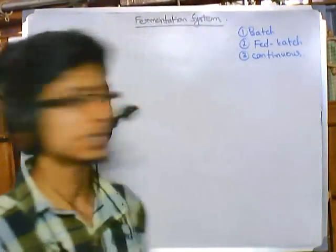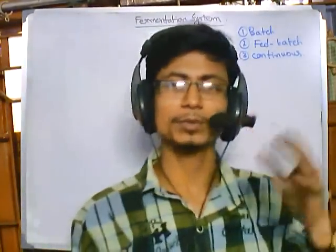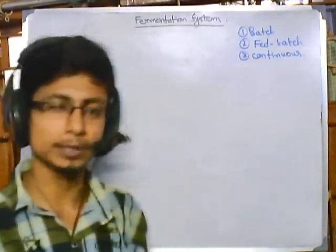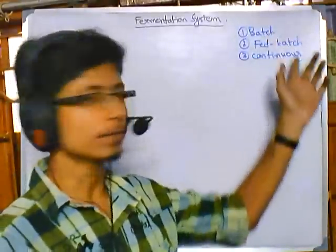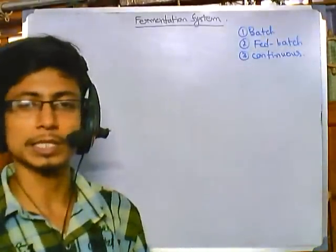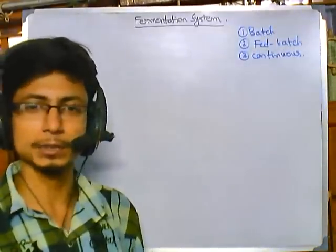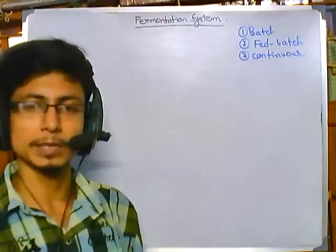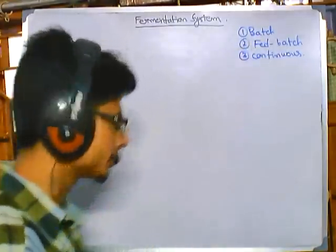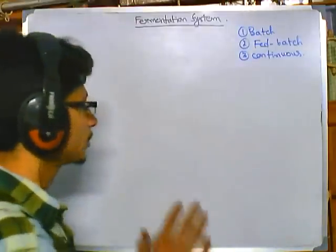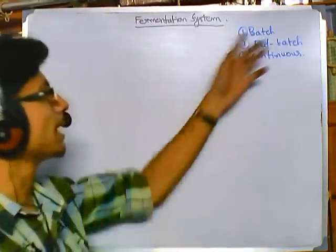We have seen the growth curve and growth features of bacteria, which we need to understand the different fermentation processes. Because we are handling bacterial cells and utilizing them, you must know the ABCDs of them before understanding different cultures. Now that we know the growth pattern, we can utilize them in batch, fed-batch, and continuous culture.